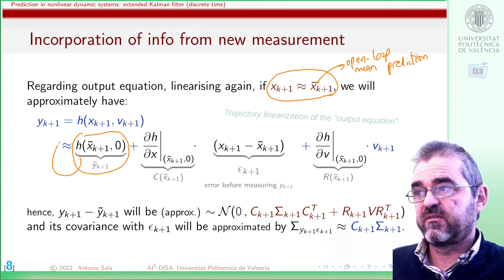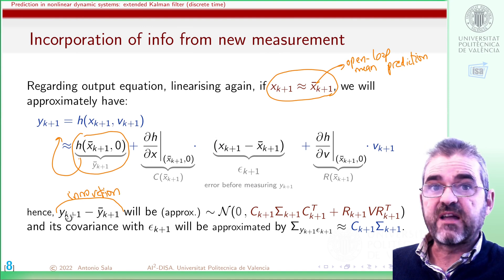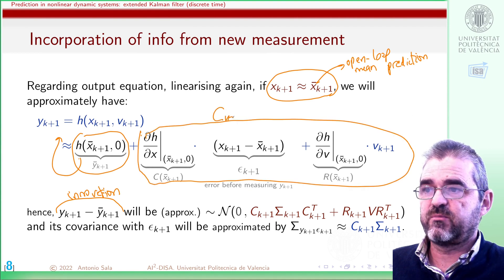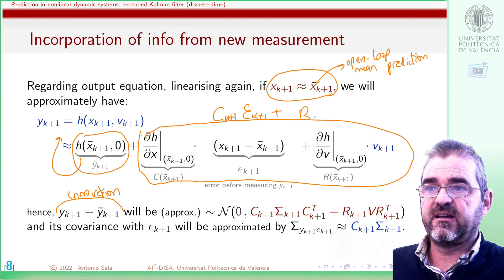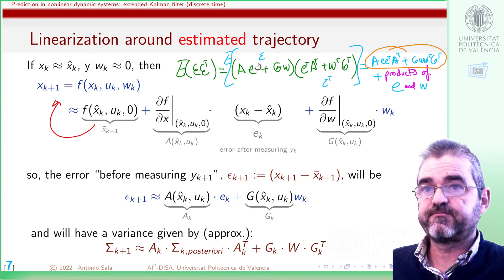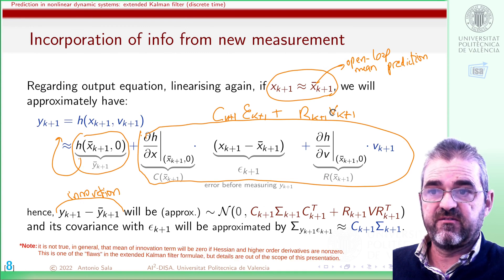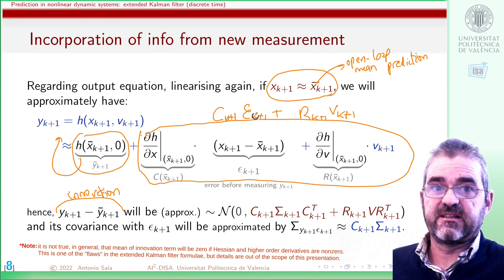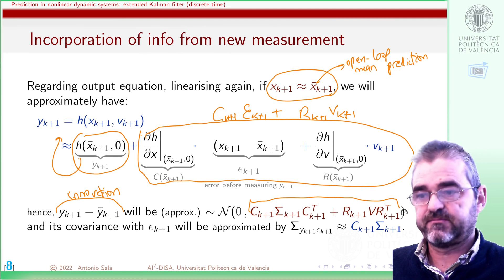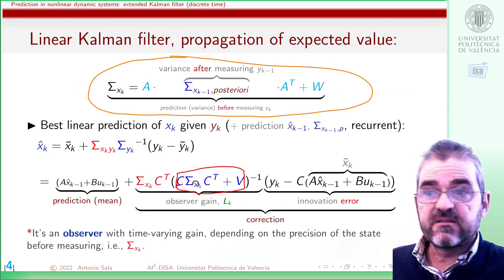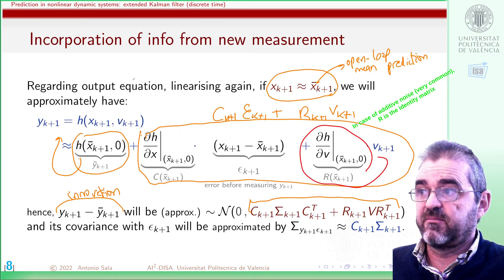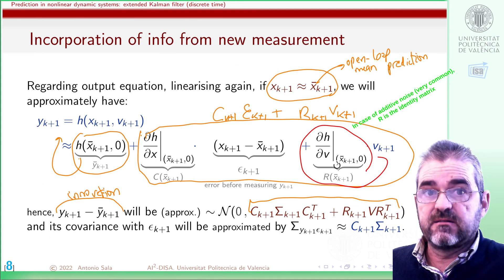So, as before, if I move this thing to the other side, the actual difference between what I will measure and what my model expects to be measured will approximately be C_{k+1} epsilon_{k+1} plus R_{k+1} v_{k+1}. Carrying out a similar procedure, we expect this to be zero mean, with variance C sigma z C transpose plus R_v R transpose, which generalizes to the nonlinear case the variance of this innovation before taking the actual measurement. If I had some additive noise, then R would be the identity.